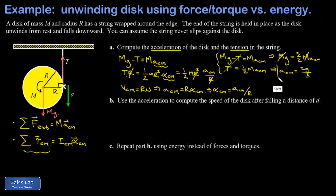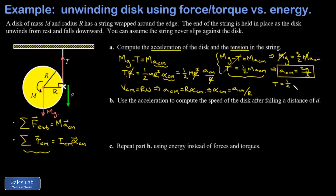As a check, two-thirds g is indeed less than g, consistent with having an upward tension force. Then for the tension, it pops out of the second equation: T = (1/2)·M·(2g/3). The twos cancel, giving T = mg/3 — one-third the weight. This is consistent with the qualitative check that tension must be less than the weight; otherwise the net force wouldn't point downward and the disk wouldn't accelerate.